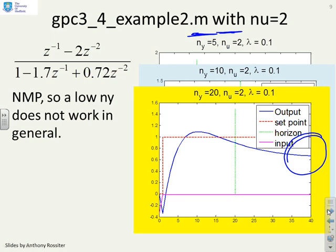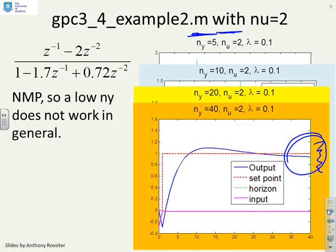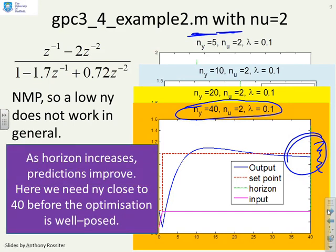If I increase the horizon up to 20, it's beginning to look a little bit better, in that the error in the steady state is coming down and it's getting closer to a value that we could live with. And if you go up to an output horizon of 40, then now you've got some predictions which aren't too bad, and I might be moderately confident with this choice of parameters giving me a well-posed optimization. So for this example, what we've noticed is we need an output horizon close to 40 before we have any confidence that the optimization is well-posed.